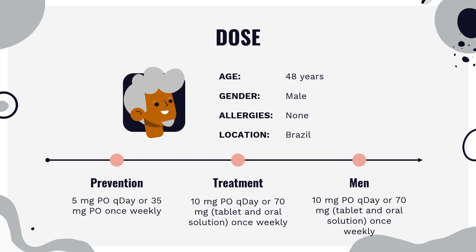Men: Fosamax 10 mg PO daily or 70 mg tablet and oral solution once weekly; Binosto 70 mg PO once weekly. Glucocorticoid-induced osteoporosis (Fosamax only): males and females 5 mg PO daily; postmenopausal women not on hormone replacement therapy 10 mg PO daily.